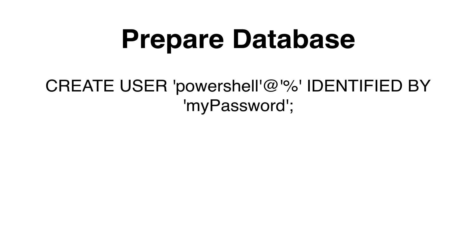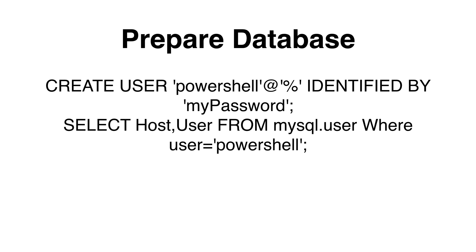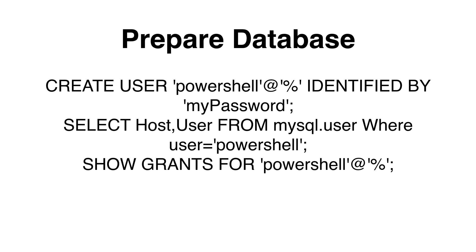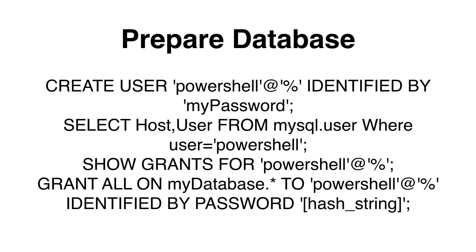IDENTIFIED BY will allow you to add a password to the user. Once we have created the user, we can check if the user was created by selecting host and user from the mysql.user database. Then we need to grant access for the user. We can look at the access rights with SHOW GRANTS FOR. Then to allow the access, we can use GRANT ALL ON database.* TO our user IDENTIFIED BY the password hash string we saw when we ran the SHOW GRANTS command.